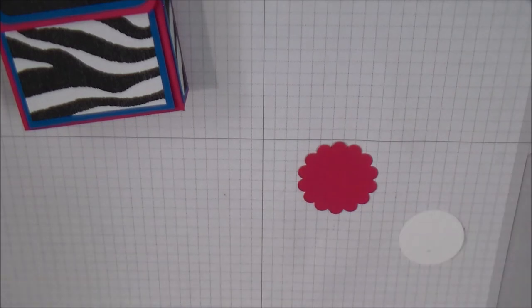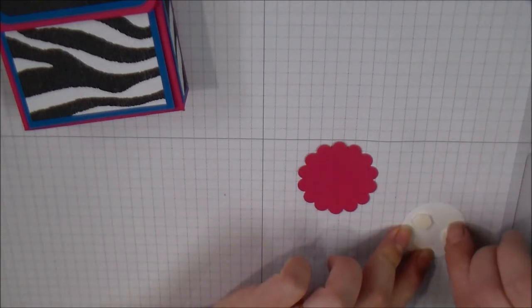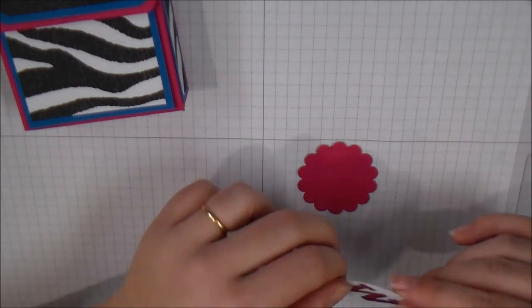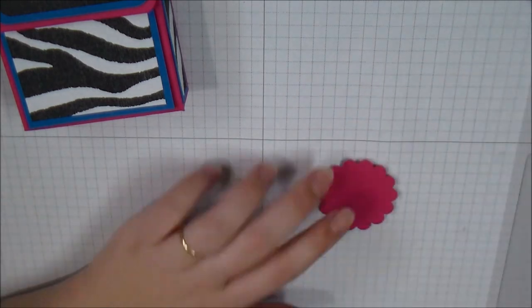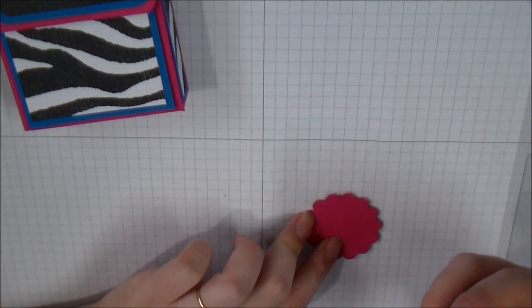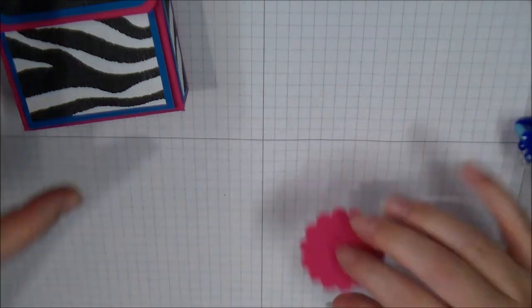And now our flap even releases nicely but still has a good hold. And I'm going to put a couple of dimensionals - you can get away with one if you wanted - a couple dimensionals on the back of my stamp piece, put that on my Melon Mambo piece, and then run some snail along the back of that and stick it in the corner of my box.